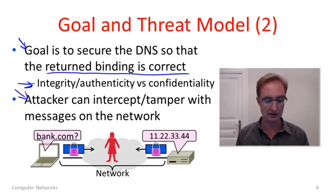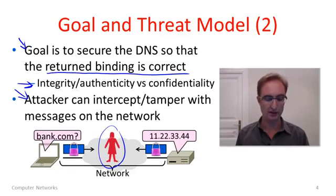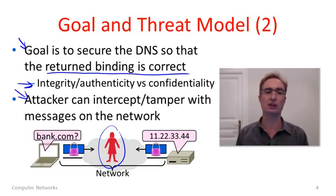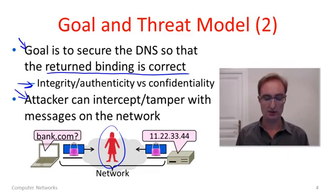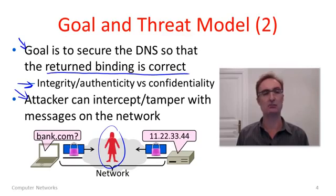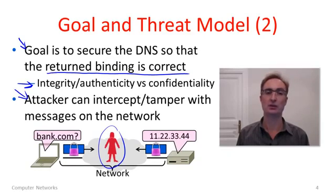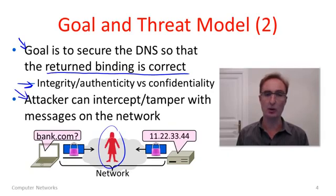Our attacker model — the threat here — is that someone in the middle of the network, Trudy, can intercept and tamper with the messages, and this can cause us to get the binding wrong. It would also be possible to consider attack models where you compromise some DNS servers, but we're going to ignore all of that for now. In this quick look, we're just going to look at activity across the network where information is corrupted on the network.